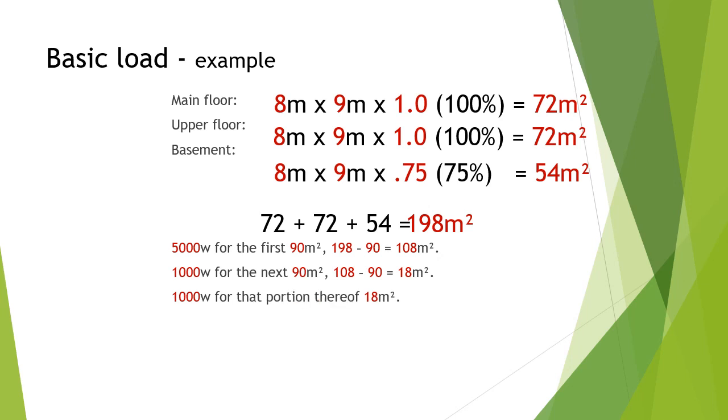We get 18 meters squared left over. We have one more portion, so we add another 1,000 watts. And then we add those together and get our basic load of 7,000 watts. And that is how you calculate the basic load in a single dwelling.